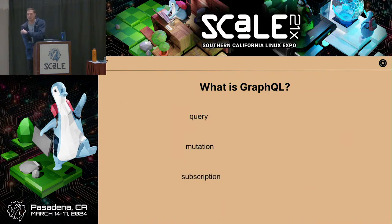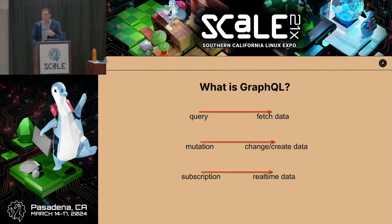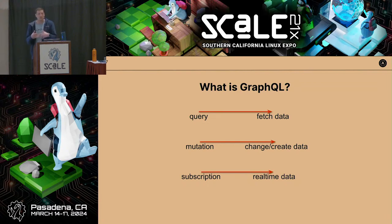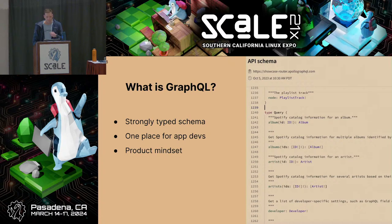I like to break GraphQL down into three simple categories defined in the spec: queries, mutations, and subscriptions. Querying is fetching data. Mutation is changing data — creating something, usually around state. And subscriptions are about real-time data — how we stream data. Those are the three distinct operations in GraphQL.